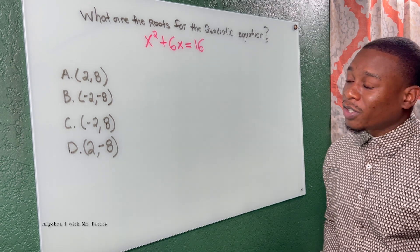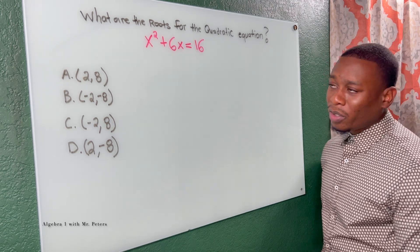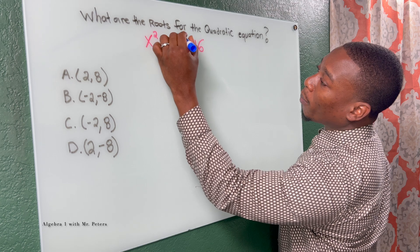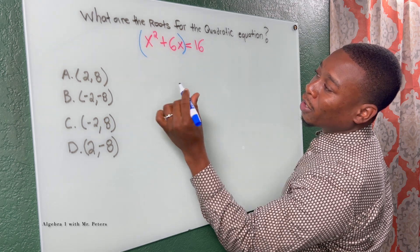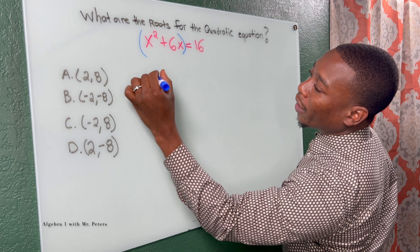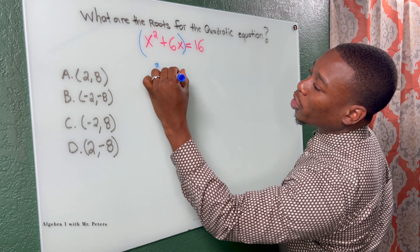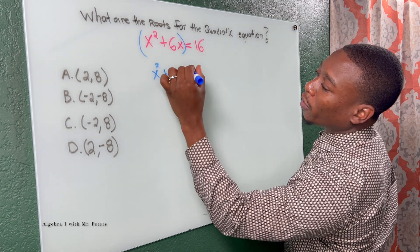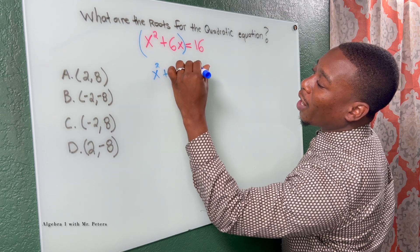So as we start this video out, first thing we want to do is use the complete the square method because it's already set up. So I take half of six, that's three, we square it, we get nine. So my perfect square trinomial will be x squared plus six x plus nine.